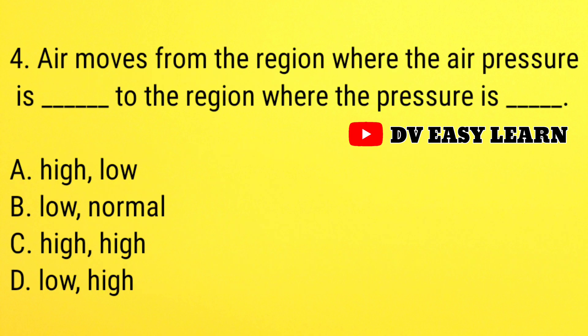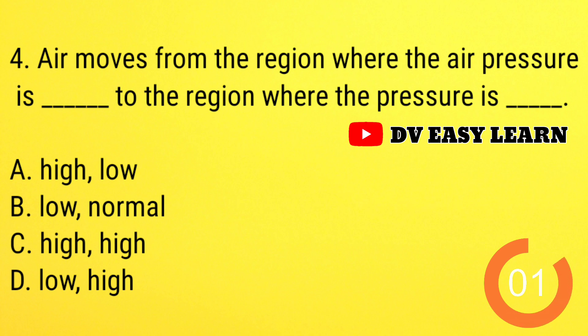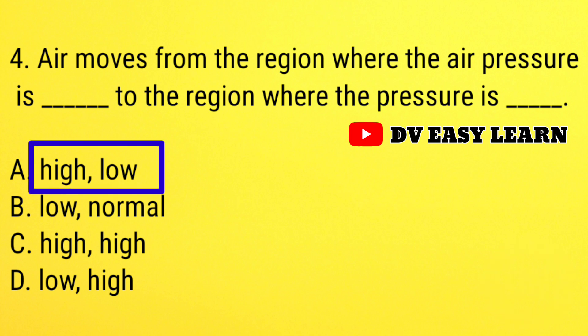Question number 4: air moves from the region where the air pressure is dash to the region where the pressure is dash. Correct answer: high and low.